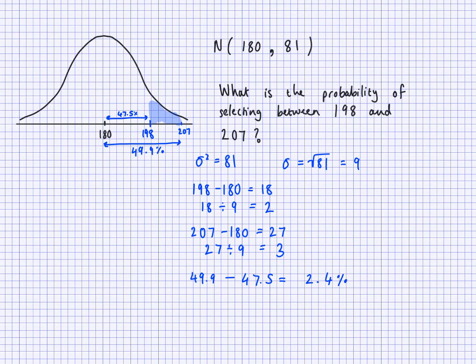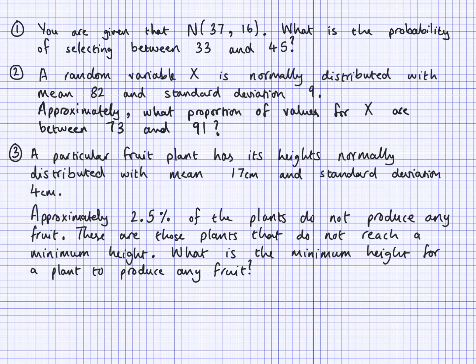So the probability of selecting someone between 198 and 207 for this normal distribution is 2.4%. Here are some questions for you to do. Remember the difference between variance and standard deviation, think carefully about which one you're using, and for the last question you may need to work backwards using what I've shown in the video.